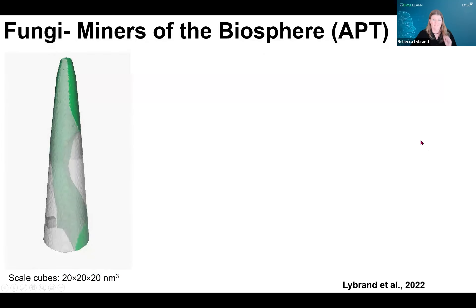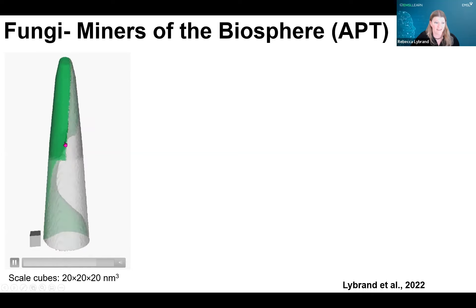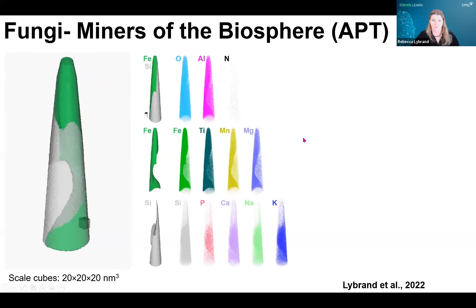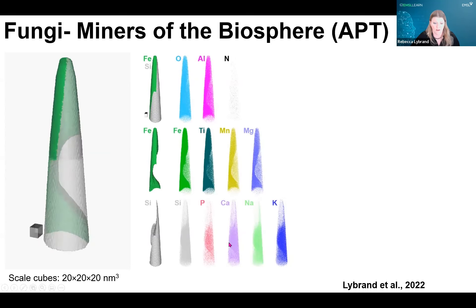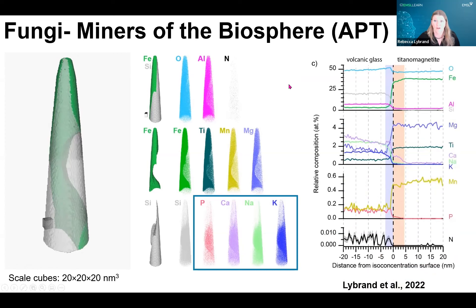One more type of analysis performed using atomic probe tomography allows you to look at the different connections between the volcanic glass matrix and the magnetite grain, identifying any kind of diffusion fronts that may be present. When we looked at this, we saw what we viewed as some abiotic enrichment of calcium right at the interface between the volcanic glass matrix and the magnetite. APT gives you this interface between the volcanic glass or background matrix and the magnetite, where you can see evidence for different types of enrichment and how the elemental distribution changes as you move from volcanic glass over to the magnetite.